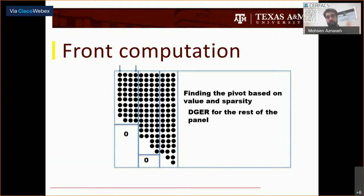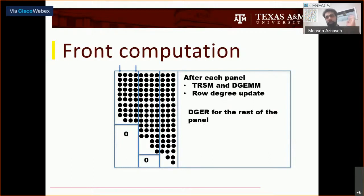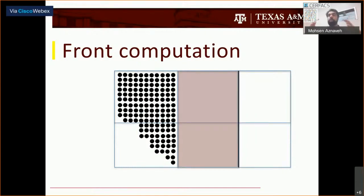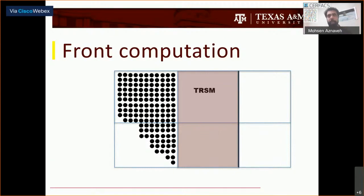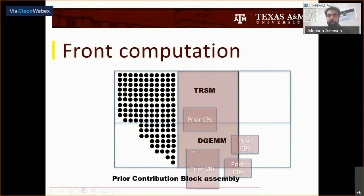There are DGER operations for the rest of the pivots in the panel. After the panel, we have TRSM, DGEMM, and the row degree update. After everything is done, we know the pivot, so we know the size of the current front. We can take the row structure, the U part, and the contribution block structure — that is very static. Now I know I can allocate the memory for that. Then we have the big TRSM and big DGEMM for good performance. After that, we can also do partial or full assembly.